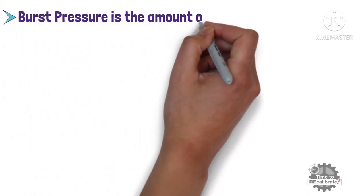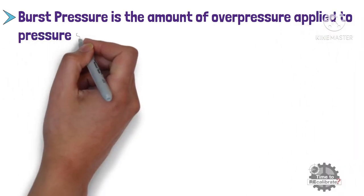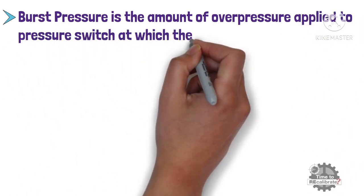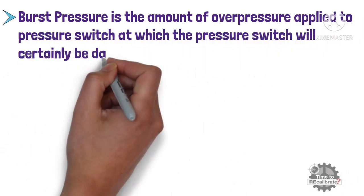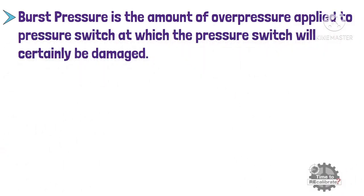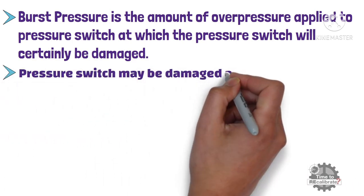Burst pressure is the amount of overpressure applied to a pressure switch at which the switch will certainly be damaged. A pressure switch may be damaged at any point between the proof pressure and burst pressure.